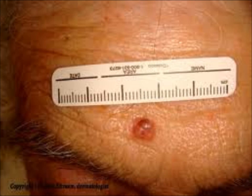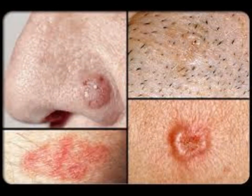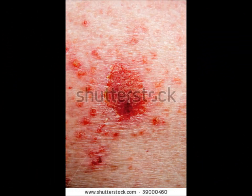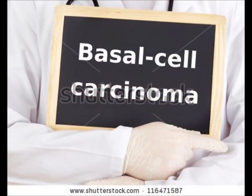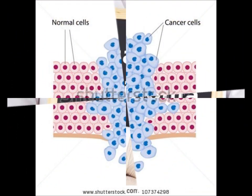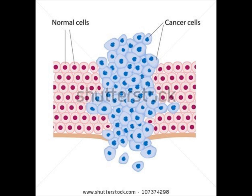What does basal cell carcinoma look like? A basal cell carcinoma usually begins as a small dome-shaped bump and is often covered by small superficial blood vessels called telangiectasias. The texture of such a spot is often shiny and translucent, sometimes referred to as pearly. It is sometimes hard to tell a basal cell carcinoma from a benign growth like a flesh-colored mole without performing a biopsy. Some basal cell carcinomas contain melanin pigment, making them look dark rather than shiny.